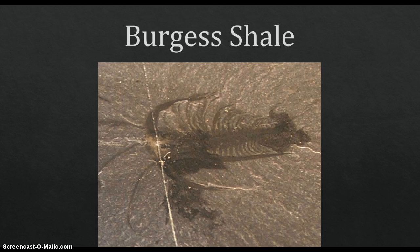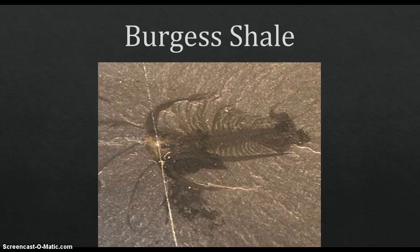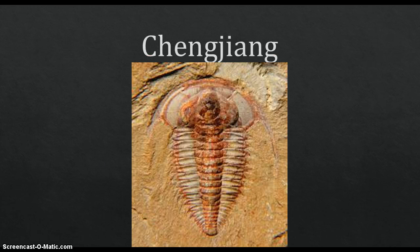Now I will explain some of the most famous Lagerstätten. The first is the Burgess Shale, located in the Canadian Rockies of British Columbia. It is one of the world's most celebrated fossil fields, famous for the exceptional preservation of the soft parts of its fossils. At 505 million years old, it is one of the earliest fossil beds containing soft part imprints.